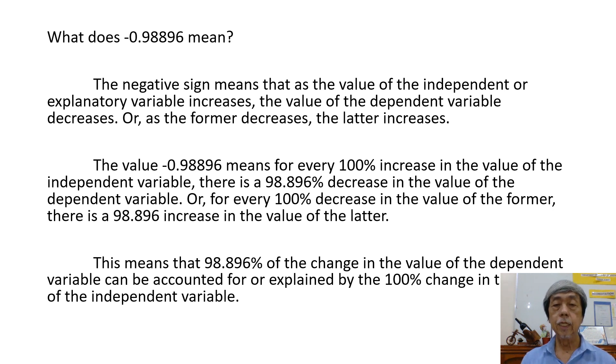The value negative 0.98896 means for every 100% increase in the value of the independent variable, there is a 98.896% decrease in the value of the dependent variable.